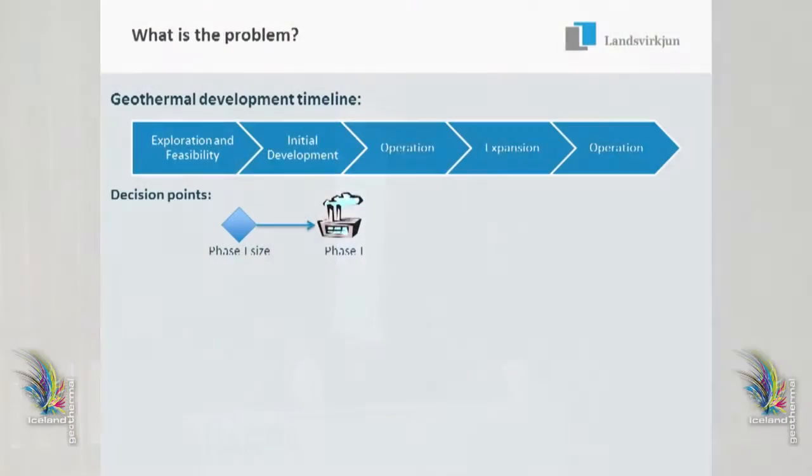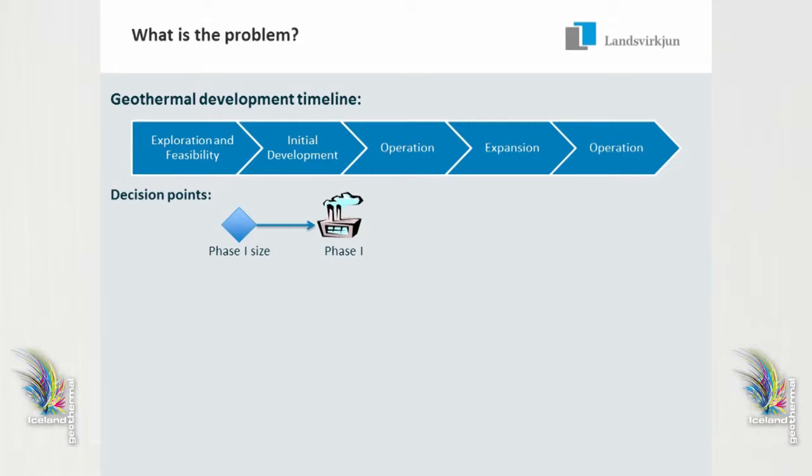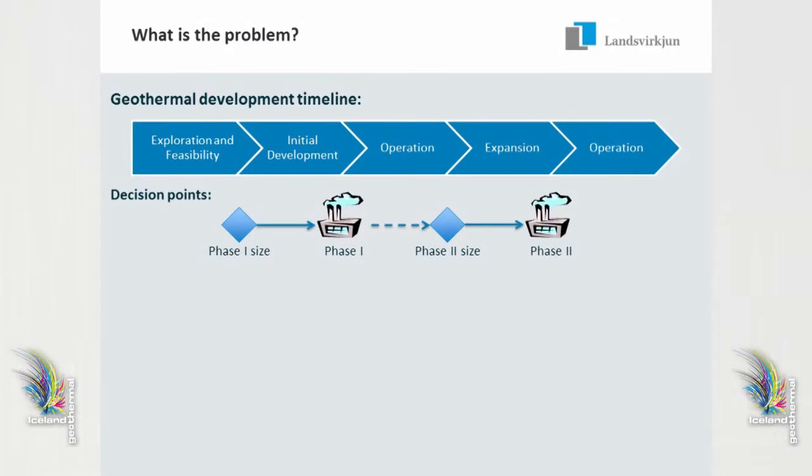You put down the money and then maybe one or two years later you actually have the power plant constructed. Then you operate for a few years, gather all the data, and you can see whether you can actually provide enough energy for the power plant. Maybe you'll realize the resource is actually a lot bigger than you thought. You might decide to expand your power plant, and this time your decision is a lot more informed — you have a lot less uncertainty. Then you build your extension, operate again, and might even want to build a third phase.